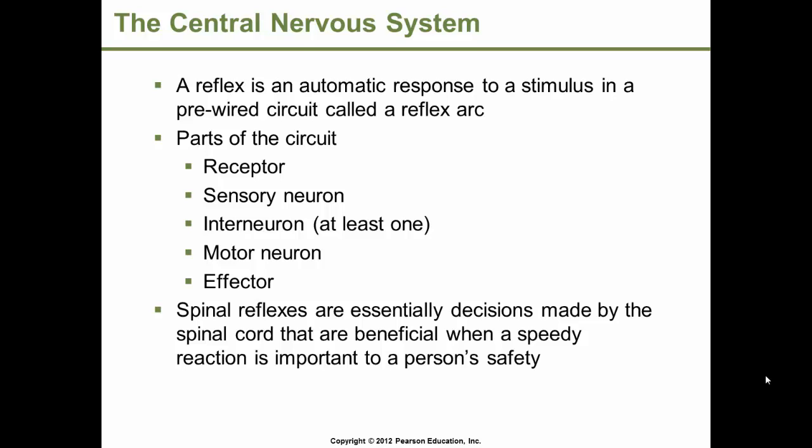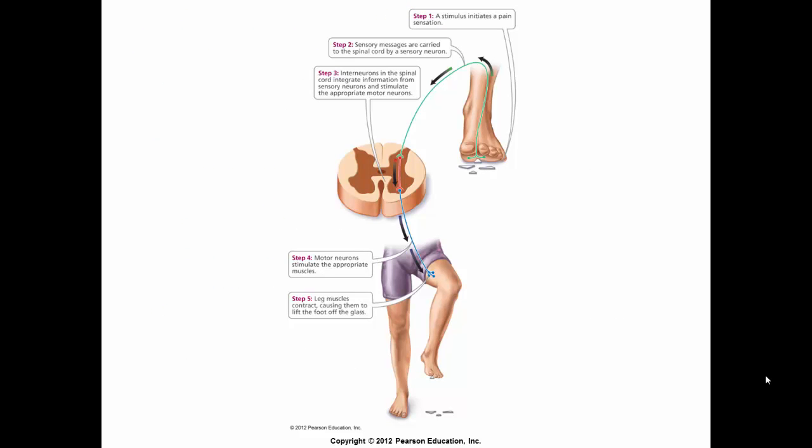Spinal reflexes are essentially decisions made by the spinal cord that are beneficial when a speedy reaction is important to a person's safety. For example, a stimulus such as stepping on glass initiates a pain sensation. Sensory neurons detect this and carry the information to the spinal cord. Interneurons in the spinal cord take this information and stimulate the appropriate motor neuron, which stimulates the appropriate muscle to contract, causing the leg muscles to lift the foot off the source of pain.